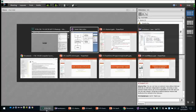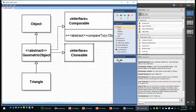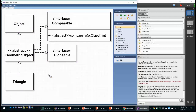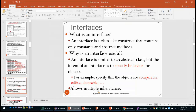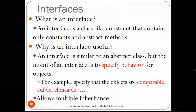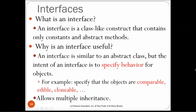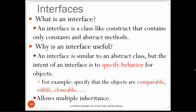An interface is similar to an abstract class, with the intent of only specifying behavior — all methods are abstract. For example, we want to specify that certain objects are Comparable, Addable, Cloneable, or Colorable. Interfaces allow multiple inheritance: in Java you can only extend one superclass, but you can implement as many interfaces as you want, and those interfaces may extend as many interfaces as they want.